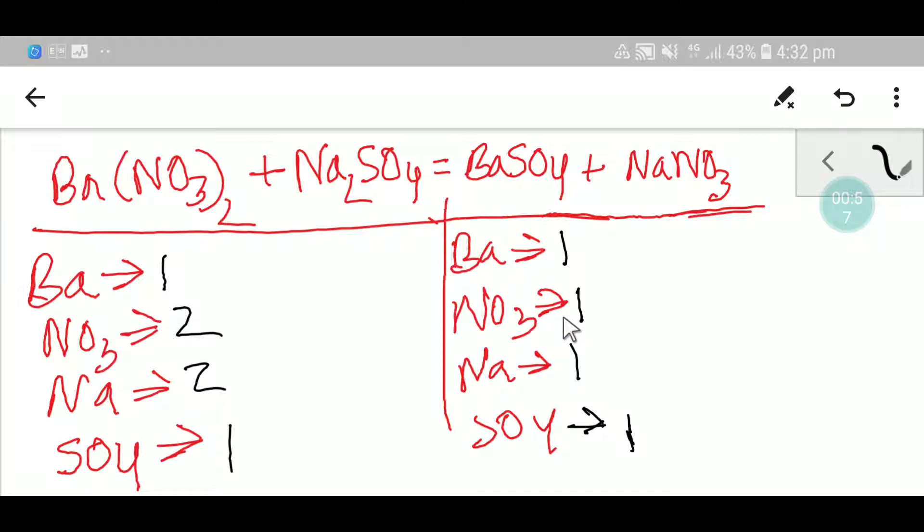Nitrate two but here one. So let me balance the number of nitrate. You can start with sodium or nitrate. Let me start with sodium. Here you have two but here you have one. So to balance the sodium I can multiply here by two. That gives me two.